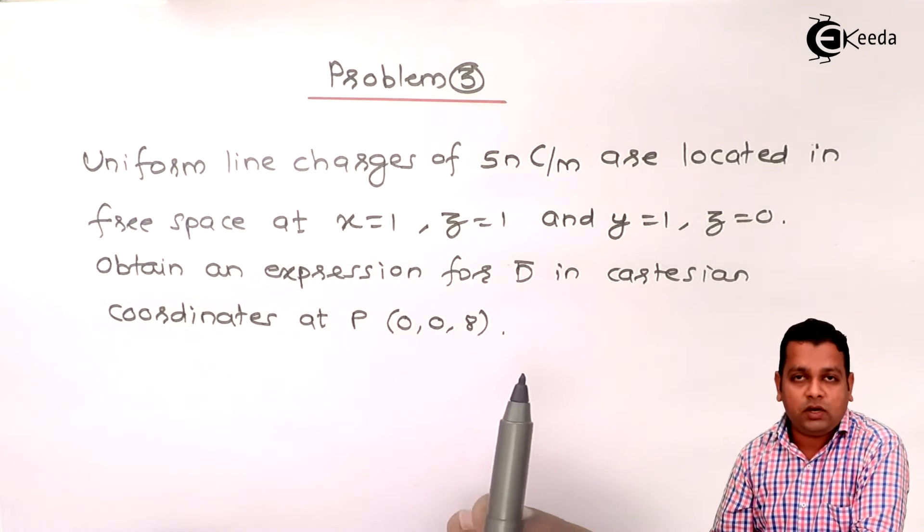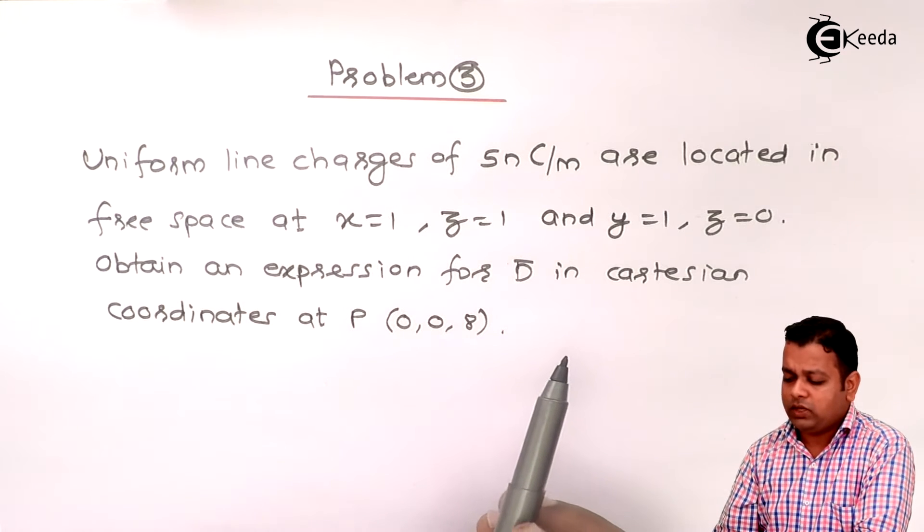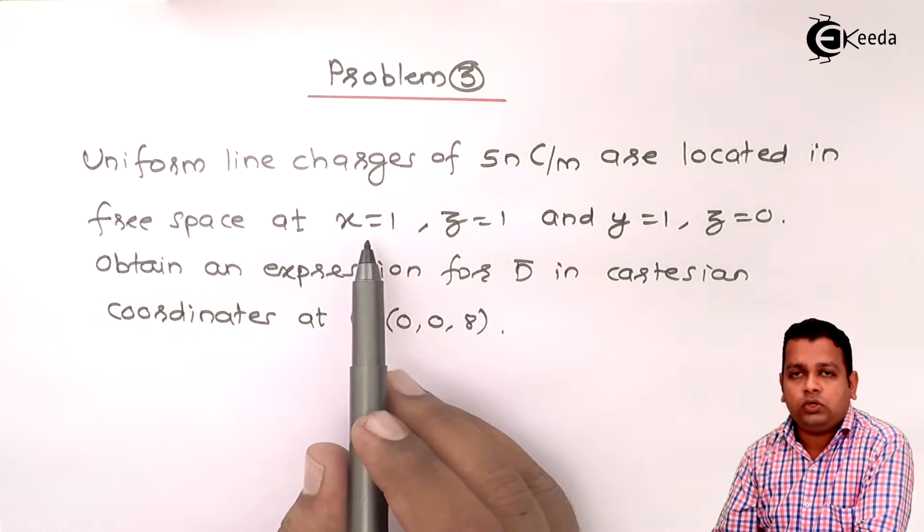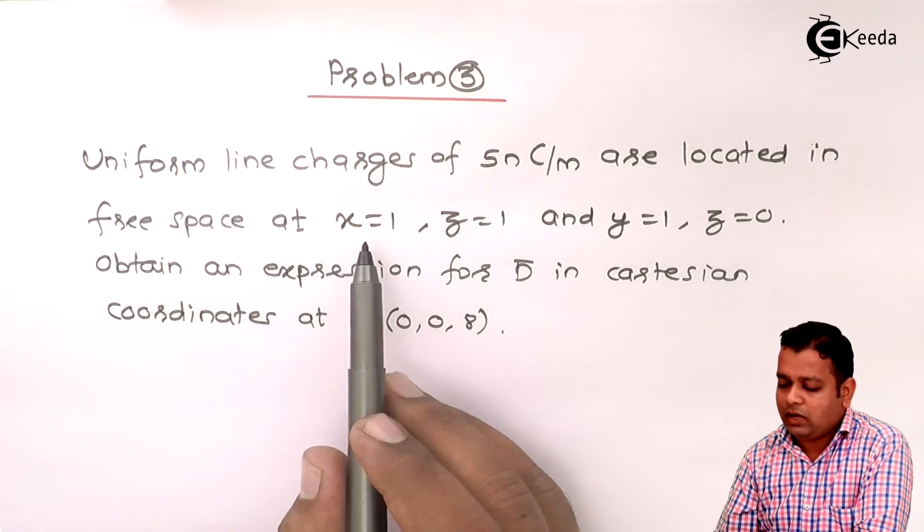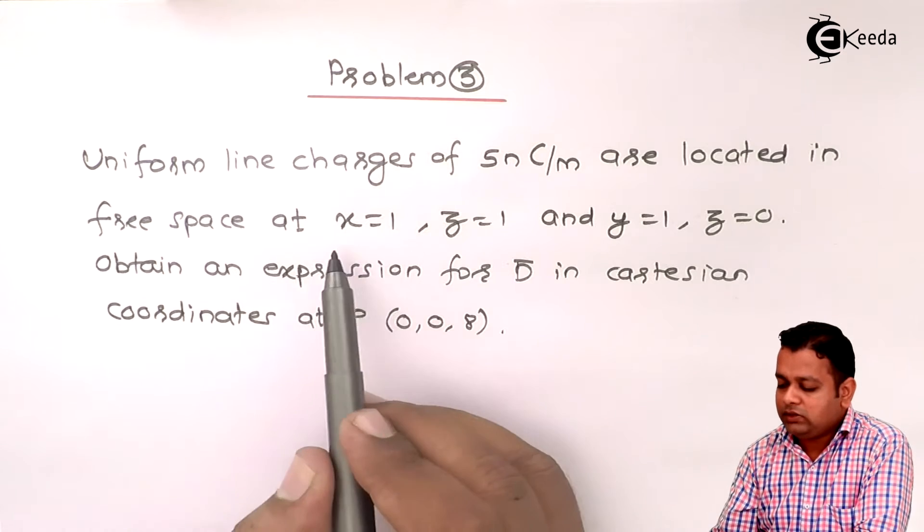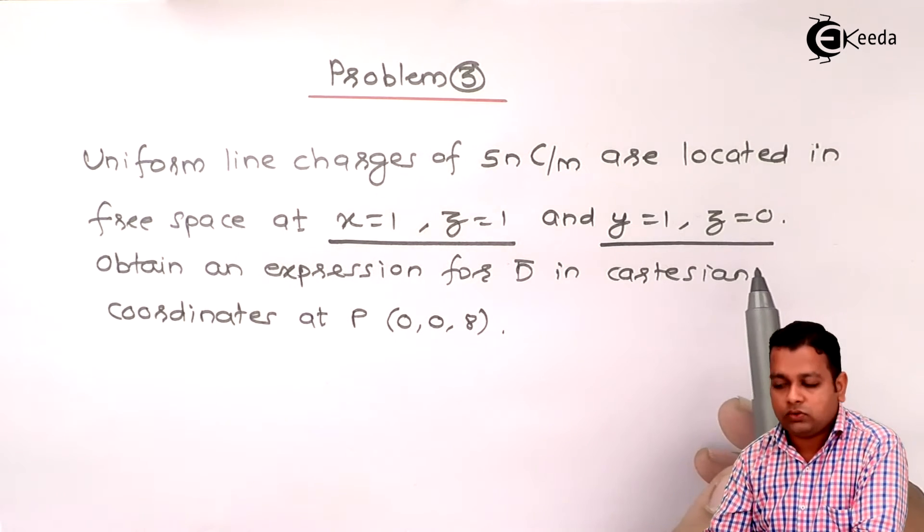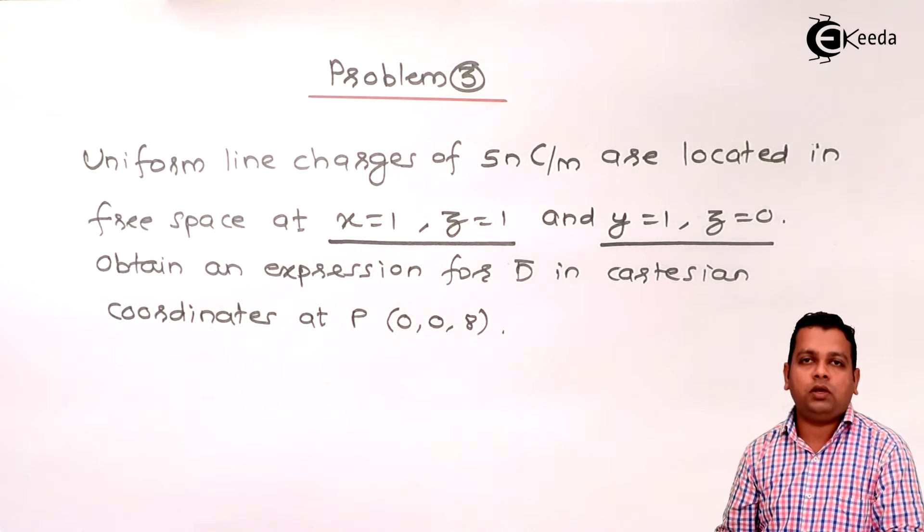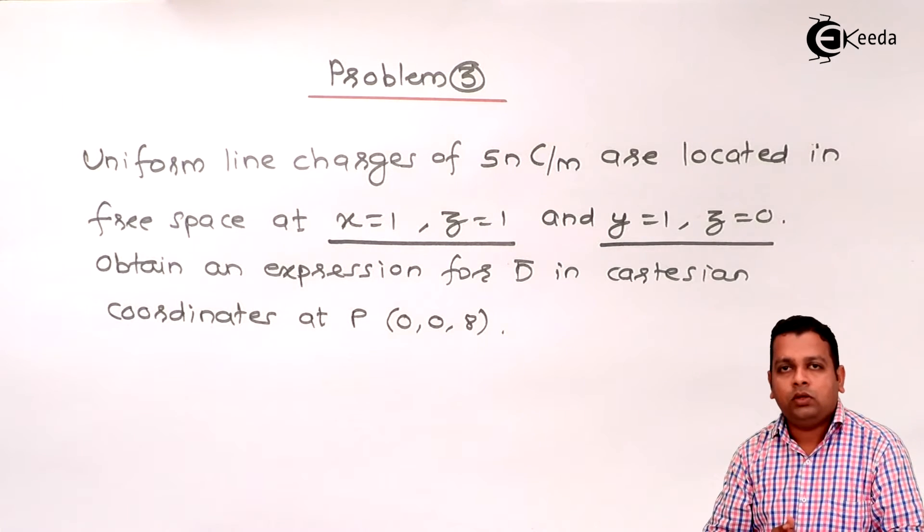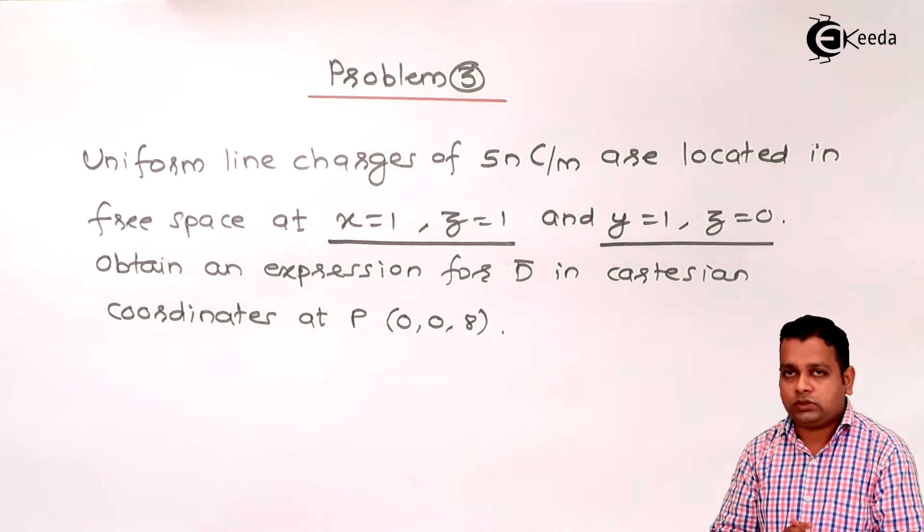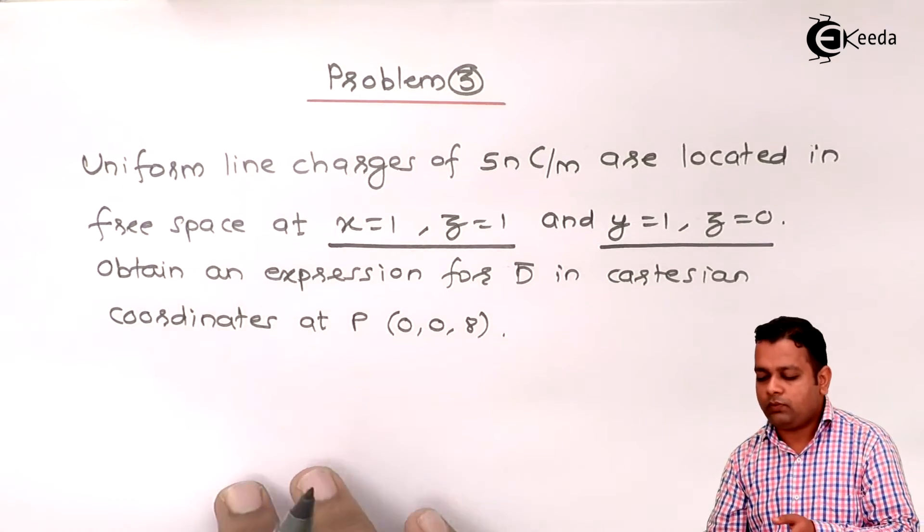Now to read the problem statement, we come to know that there are two uniform infinite line charges. The line charges are given by x equals 1, z equals 1, y equals 1, z equals 0. So first of all in the diagram we will have the location of the charges, then we can proceed further.